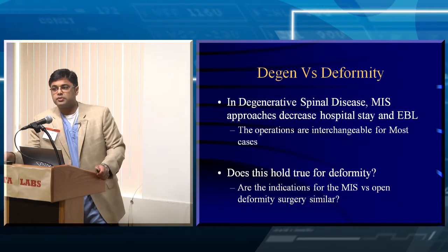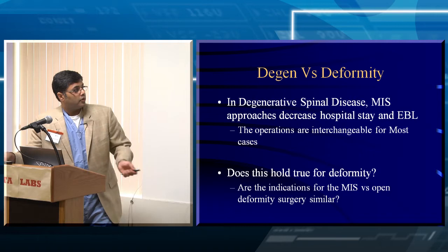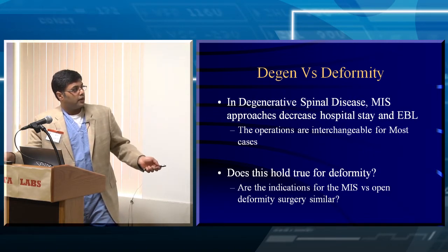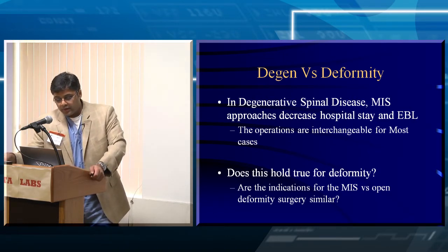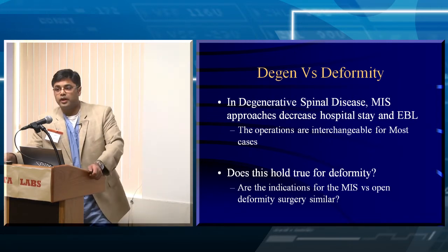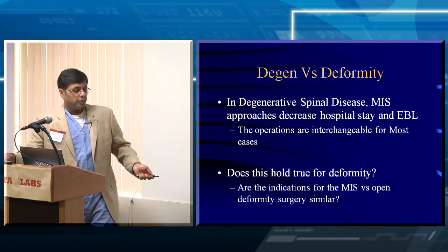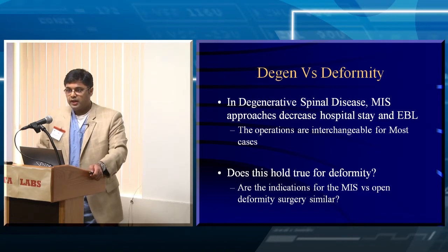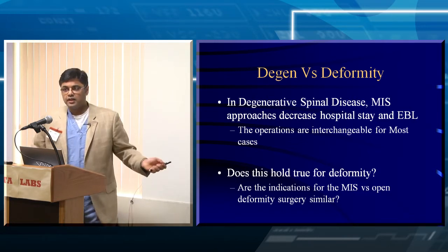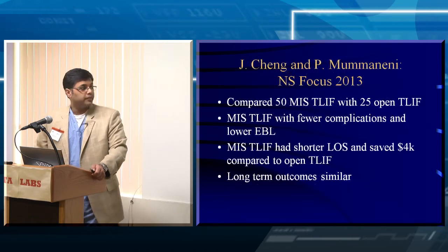In degenerative spine disease, there is a measurable impact if you do MIS versus open. For single-level degenerative disease, hospital stay and EBL are lower in MIS TLIF cases. However, does this hold true for MIS versus open deformity surgery? The answer is no. Patients you can treat with open deformity surgery sometimes cannot be treated with MIS deformity surgery — that's a key take-home message. Some patients shouldn't have MIS if they have certain parameters, or you'll predict failure and re-operation.